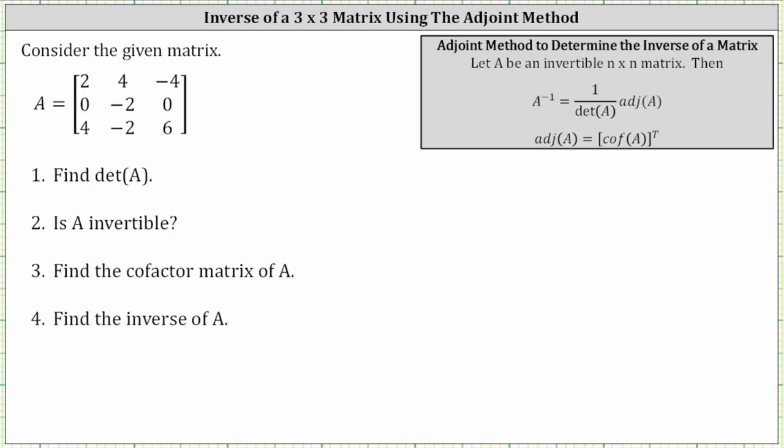Given matrix A, we're asked to find the determinant of A, determine if A is invertible, find the cofactor matrix of A, and finally find the inverse of A. Let's begin by finding the determinant.